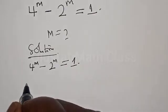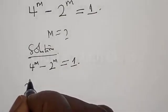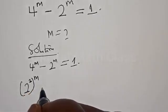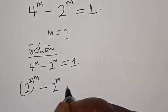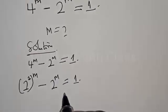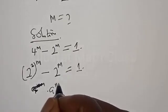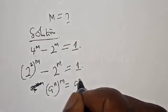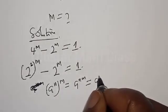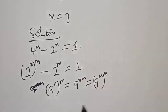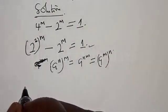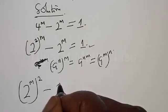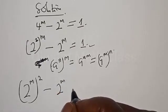Then 4 raised to power m can be expressed as 2 raised to power 2m, so we have 2 raised to power 2m minus 2 raised to power m equal to 1. Then from here, we have 2 raised to power m squared minus 2 raised to power m equal to 1.